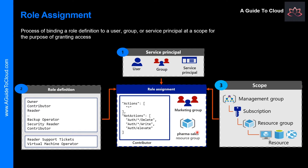This diagram shows an example of a role assignment. The marketing group has been assigned the contributor role for the pharma sales resource group. This means users in the marketing group can create or manage any Azure resource within that resource group. Marketing users do not have access to resources outside the pharma sales resource group unless they are part of another role assignment. Note that access does not need to be granted at the entire subscription level — roles can also be assigned at the resource group or individual resource level.